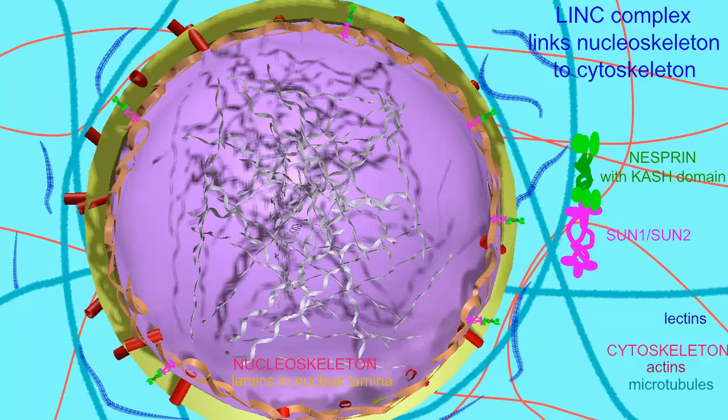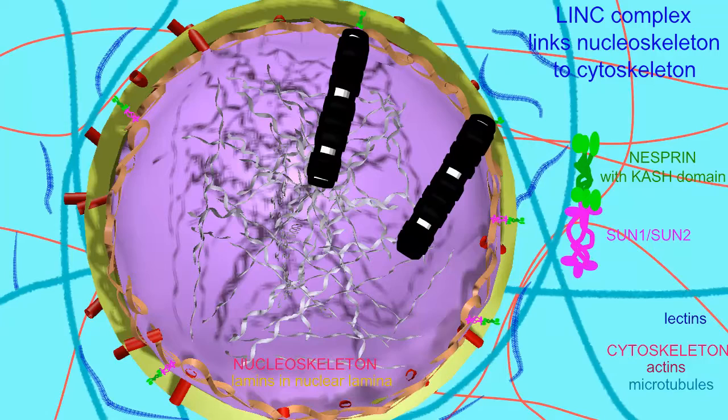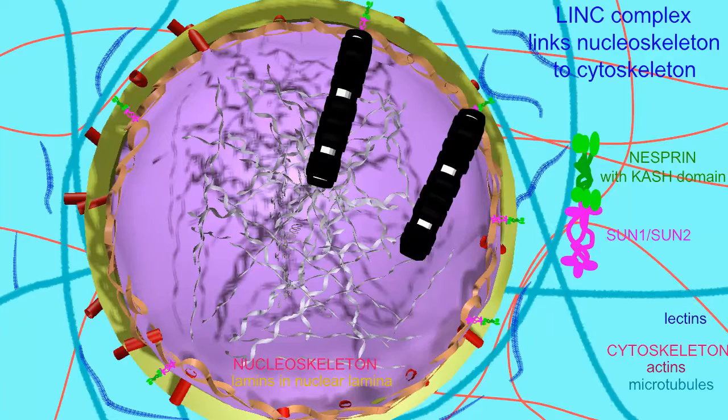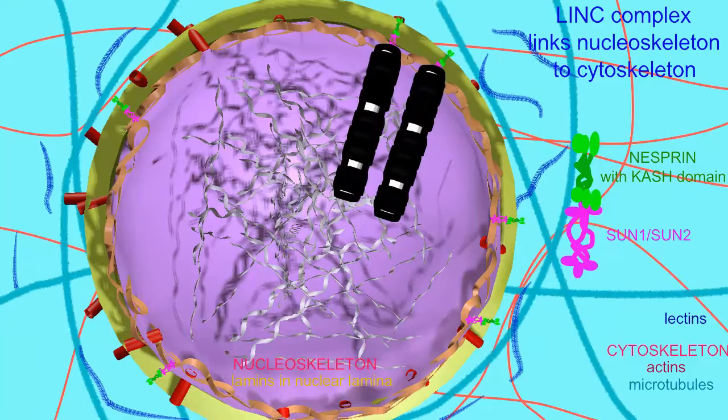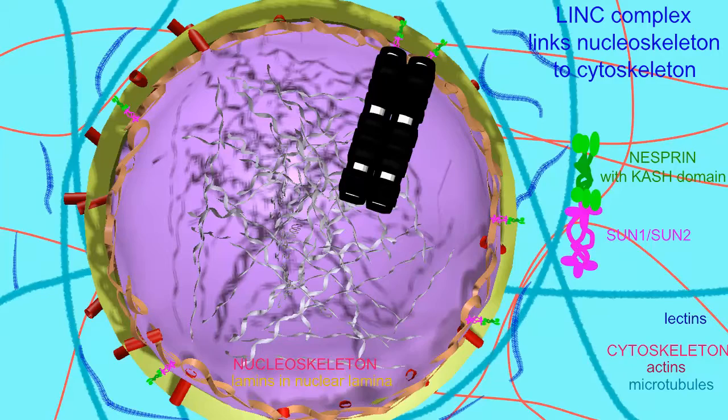as sister chromatids seek out their homologues in prophase I of meiosis, chromosomes are moving because the telomeres are attached to LINC processes on the inner nuclear membrane, which on the other side